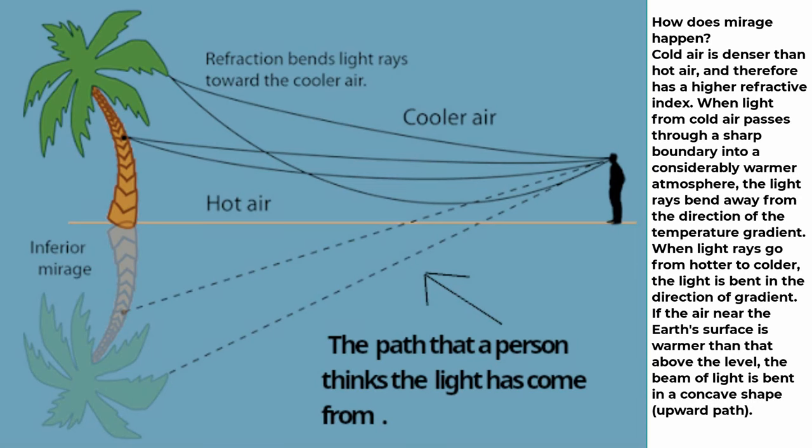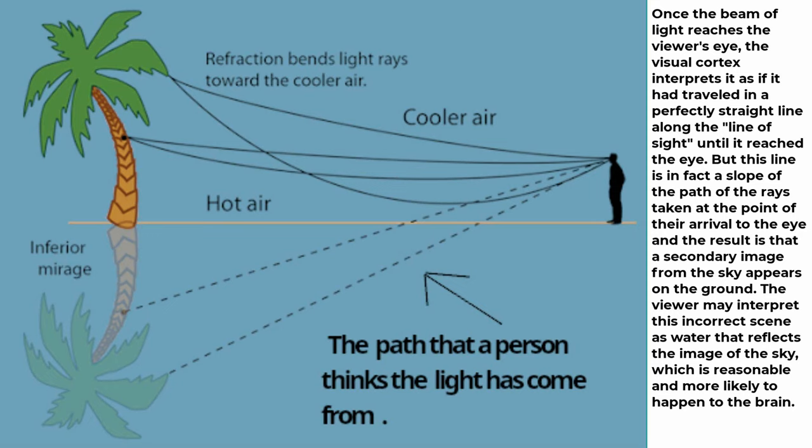How does mirage happen? Cold air is denser than hot air, and therefore has a higher refractive index. When light from cold air passes through a sharp boundary into a considerably warmer atmosphere, the light rays bend away from the direction of the temperature gradient. When light rays go from hotter to colder, the light is bent in the direction of gradient. If the air near the Earth's surface is warmer than that above the level, the beam of light is bent in a concave shape, upward path. Once the beam of light reaches the viewer's eye, the visual cortex interprets it as if it had traveled in a perfectly straight line along the line of sight until it reached the eye. But this line is in fact a slope of the path of the rays taken at the point of their arrival to the eye and the result is that a secondary image from the sky appears on the ground. The viewer may interpret this incorrect scene as water that reflects the image of the sky, which is reasonable and more likely to happen to the brain.